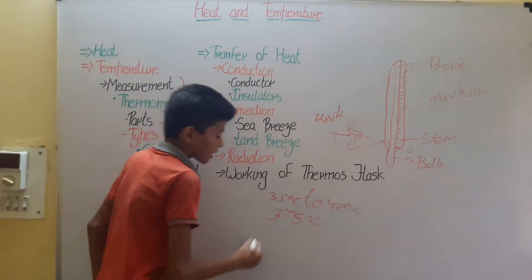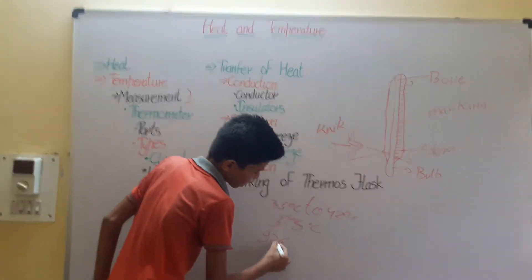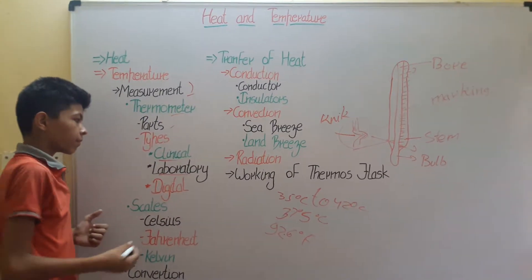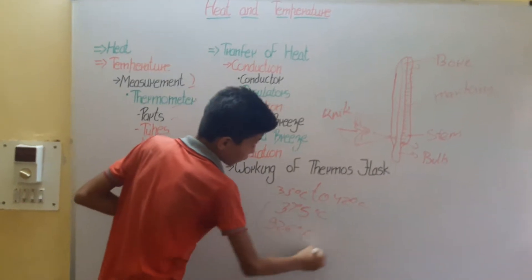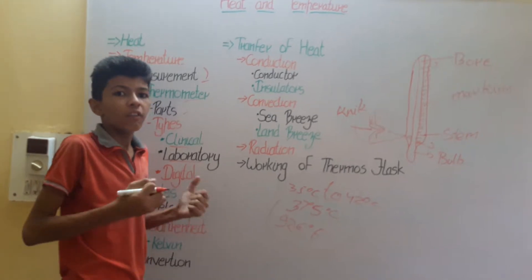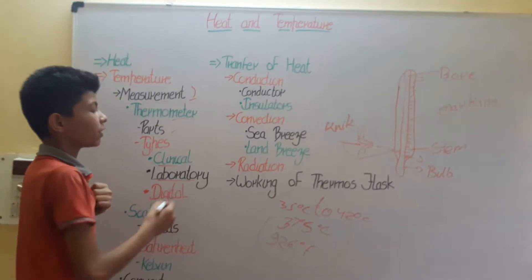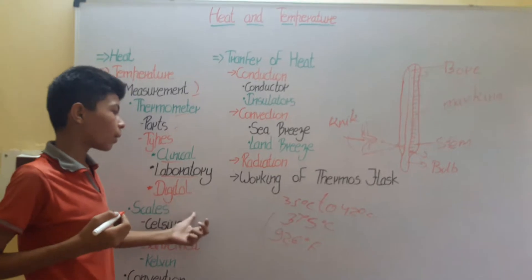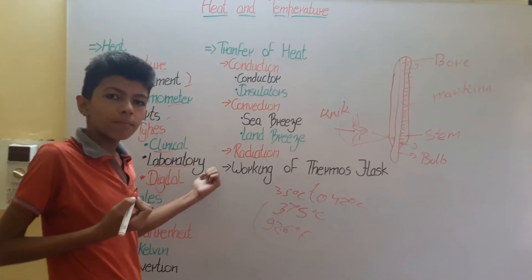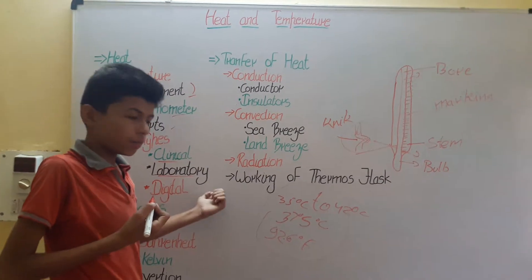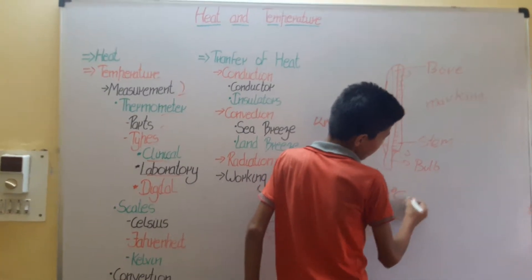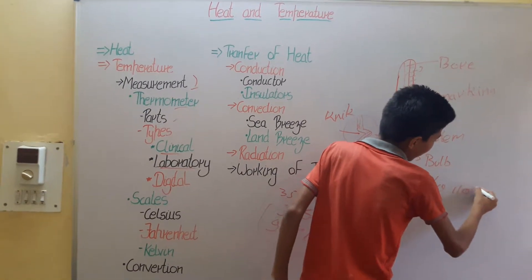In Fahrenheit, the average human body temperature is about 98.6 degrees Fahrenheit. Clinical thermometers are used to measure our temperature, especially when we have a fever. Then we have the laboratory thermometer, which is used in the lab for doing experiments. Its markings range from minus 10 degrees Celsius to 110 degrees Celsius.